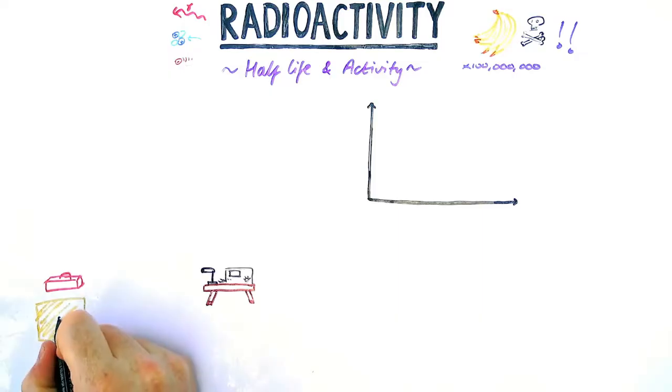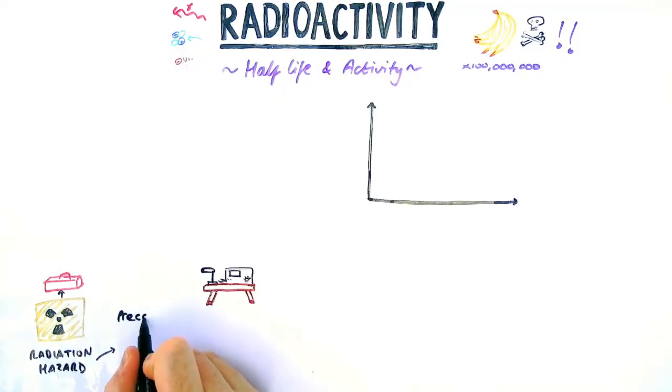Something you might need to worry about is if you use radioactive sources in a lab. You'll find a symbol that looks a bit like this which indicates there is a radiation hazard or radioactive hazard present in the room. Now as a student you'll be unlikely to be using them, however your teacher will take precautions when using the sources.